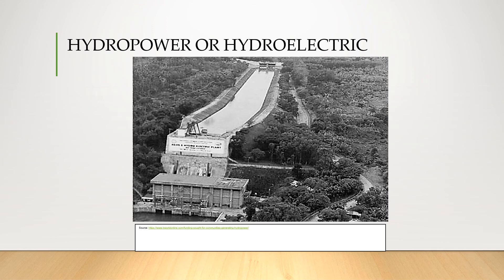The third energy resource is hydropower or hydroelectric energy — the conversion of energy from flowing water into electricity. Some also utilize hydrothermal energy. Large hydroelectric power plants in the Philippines include Ambuklao in Benguet, Magat in Isabela, and Agus in Lanao del Sur and Lanao del Norte.